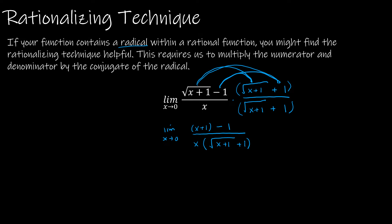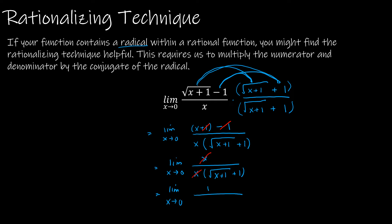Simplifying the numerator: x plus 1 minus 1 gives me x. So I now have x in the numerator and x times the square root of x plus 1 plus 1 in the denominator. I can cancel the x, giving the limit as x approaches 0 of 1 over the square root of x plus 1 plus 1. Now I can plug in 0: the numerator is 1, and the denominator is the square root of 0 plus 1 plus 1, which equals 1 plus 1, giving me 1 half.